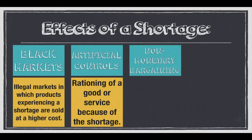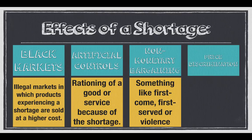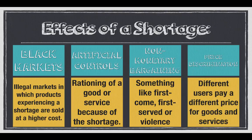We see non-monetary bargaining such as first come, first serve, or even violence in order to get what we want. And last but not least, we see price discrimination, where prices paid by different users depend on the amount of money that the user has.